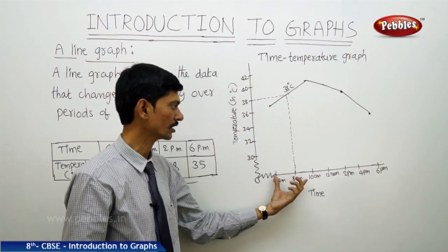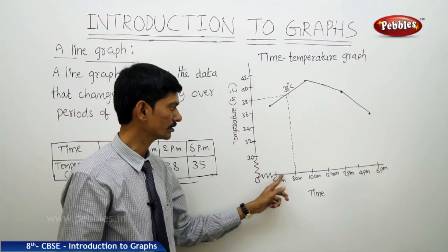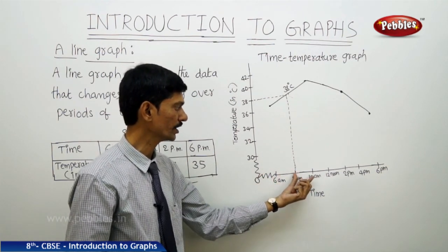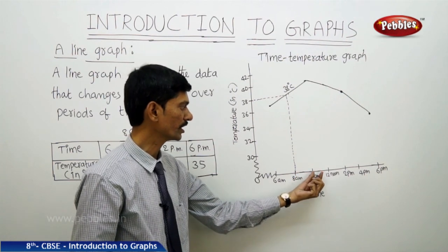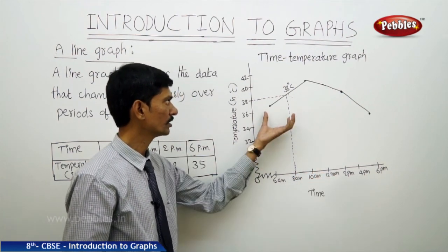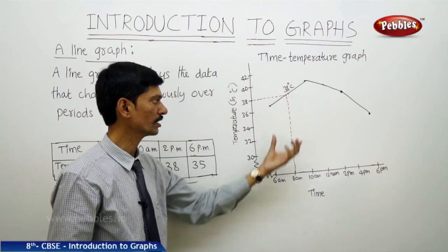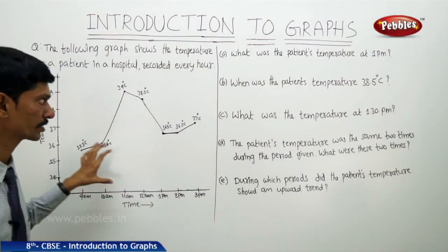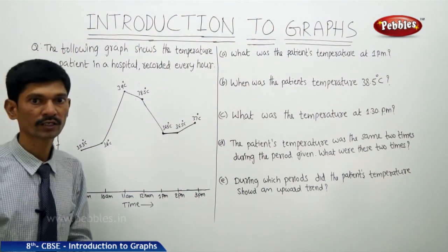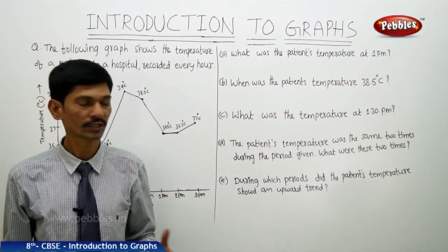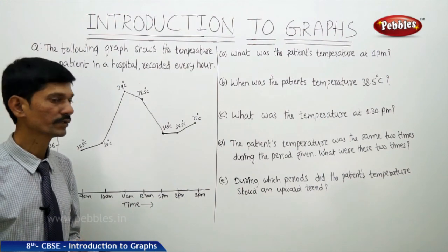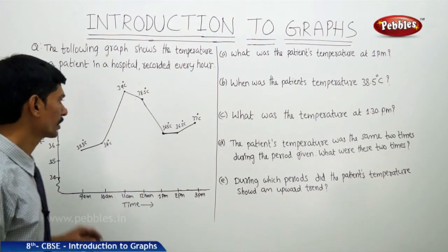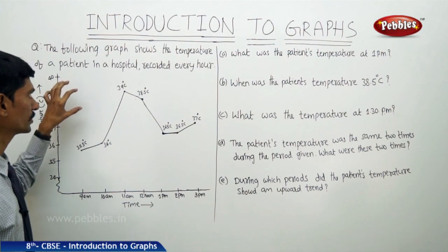When you take time on the horizontal line, the data changes continuously over periods of time — from 6 a.m. to 8 a.m., from 8 a.m. to 10 a.m., from 10 a.m. to 12 noon. So far we have discussed bar graph, double bar graph, pie chart, histogram, and line graph. Now let us solve some problems.